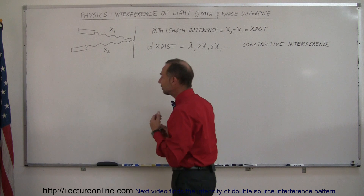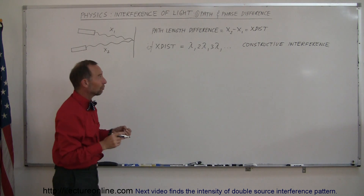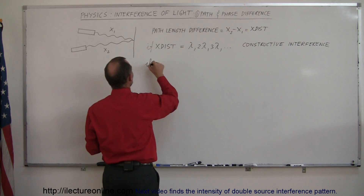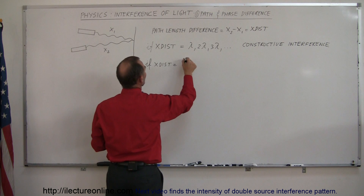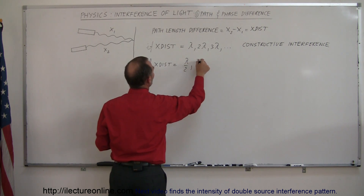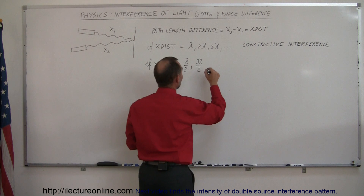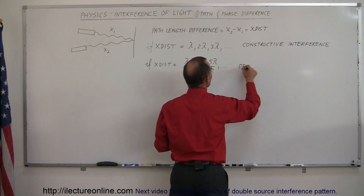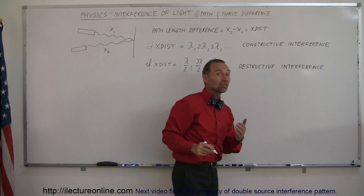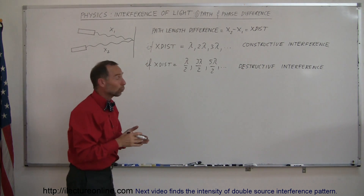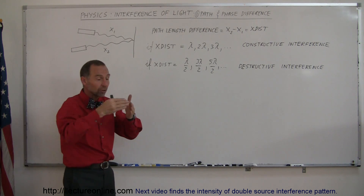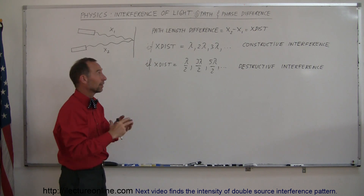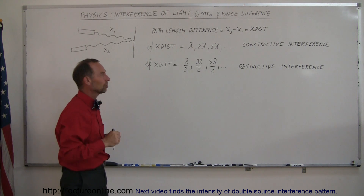However, if the extra distance traveled is a half wavelength, one and a half wavelengths, two and a half wavelengths, or so forth — that is, equal to one-half, three-halves, or five-halves of a wavelength — then we have what we call destructive interference. When the two beams come together under those conditions, they actually cancel each other out, and you'll see nothing on the screen — just a dark spot, and no light will be seen. They literally cancel each other out.